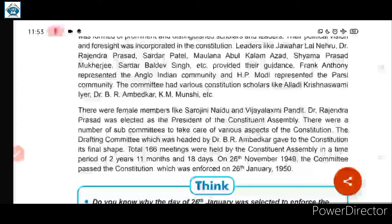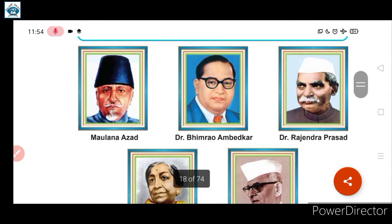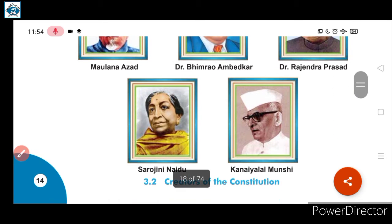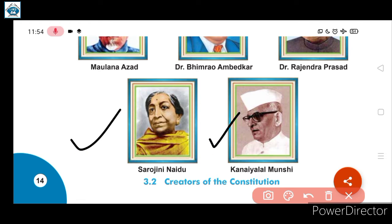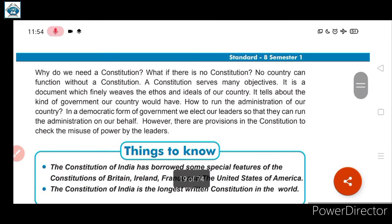During this period the constitution was prepared with the help of experts and leaders such as Jawaharlal Nehru, Sardar Patel, and Dr. Rajendra Prasad. Along with male leaders, there were female members also — Sarojini Naidu and Vijayalakshmi Pandit. Under Dr. Rajendra Prasad's supervision, committees and assemblies were convened. Famous leaders like Maulana Azad, Dr. B.R. Ambedkar, and Kanayalal Munshi were also part of the constituent assembly.